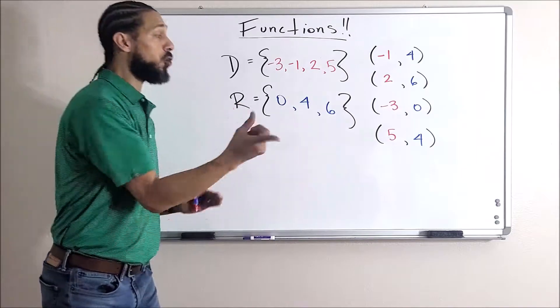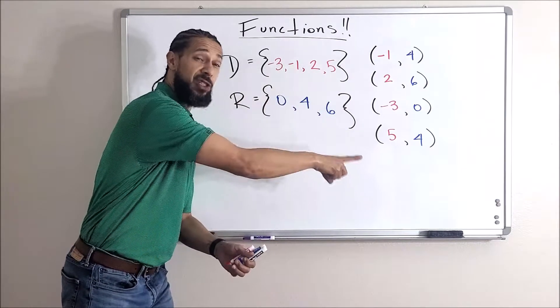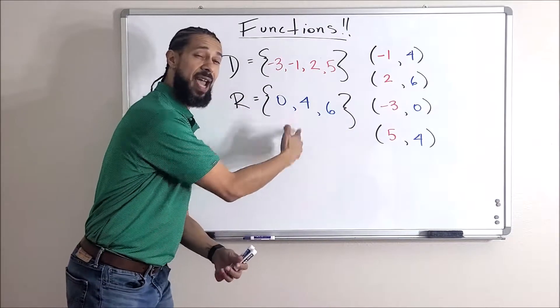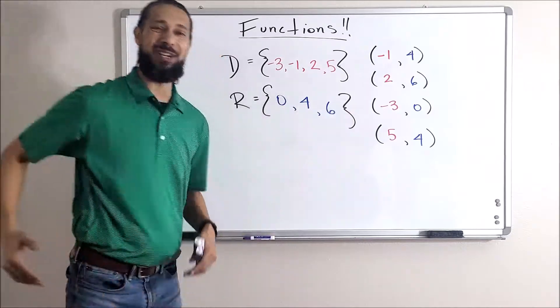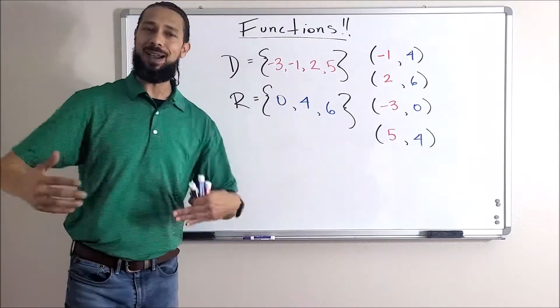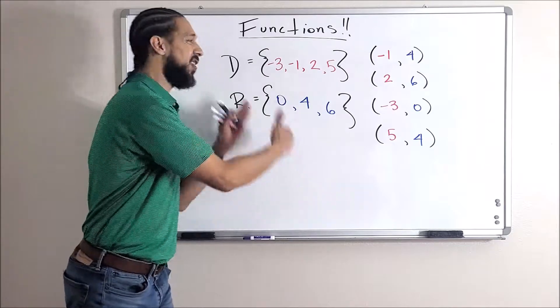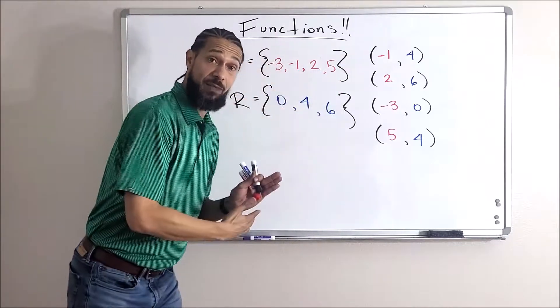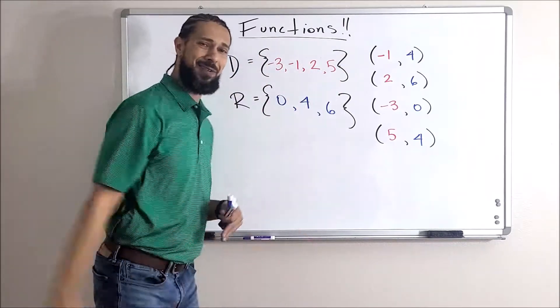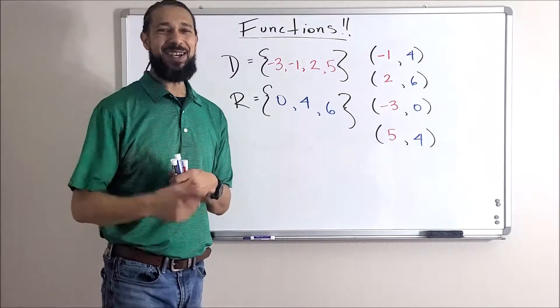That's how you group them all together. Also notice that four that showed up twice - only write it down once, and I'll put them in ascending order. This is exactly how it's done for a collection of points. The domain is a collection of the x values, the range is a collection of the y values.